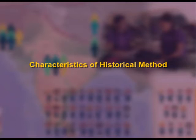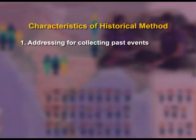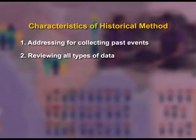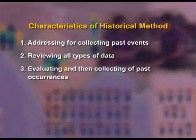Characteristics of historical method: First, addressing for collecting past events — after deciding a study topic, historical method is used to collect events of the past. Second, reviewing all types of data — the historical method is very helpful to review primary and secondary data. Third, evaluating and collecting past occurrences — this method comprises systematic collection and objective evaluation of data related to past occurrences.